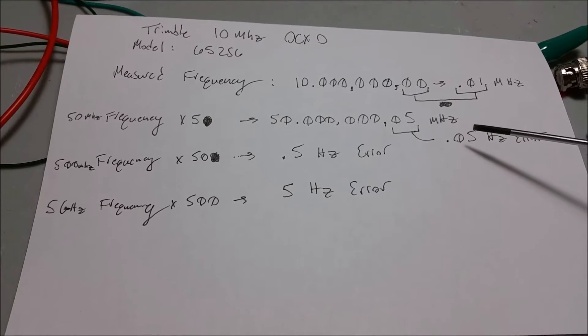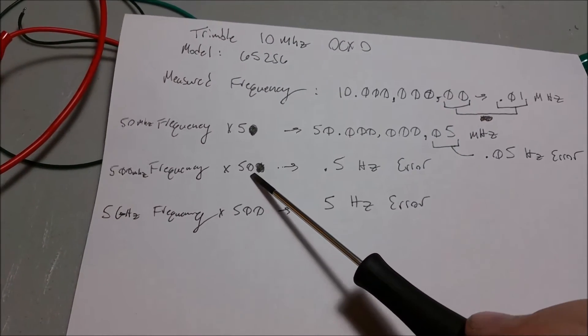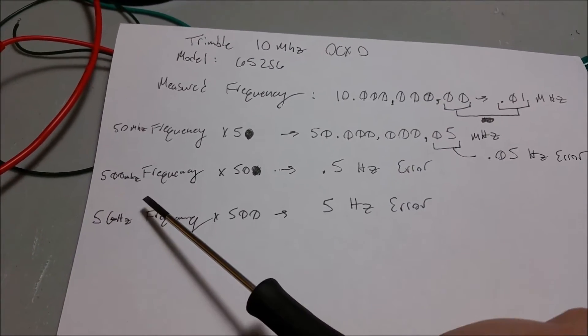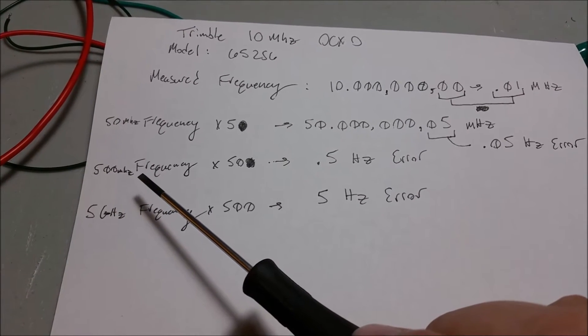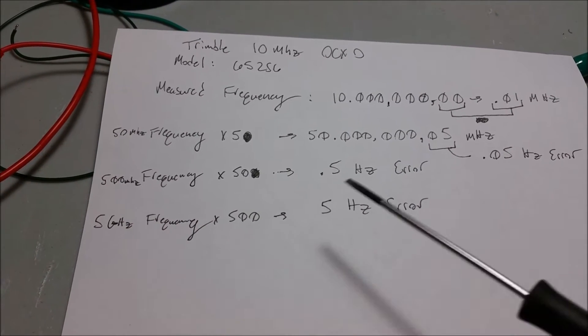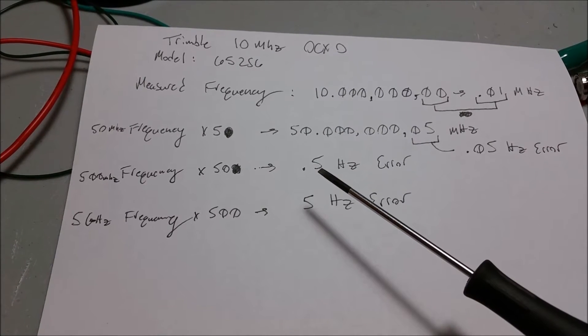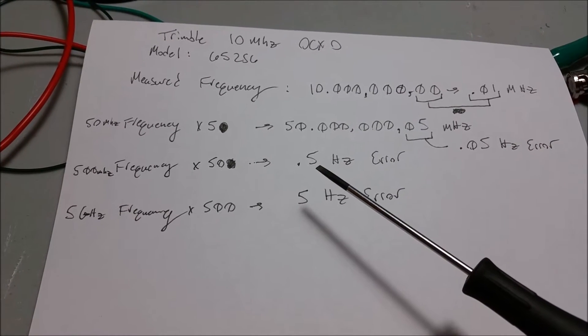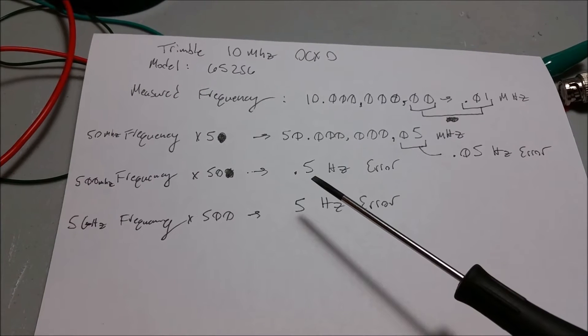Up from there, we have times it by 50, which gives us 500 megahertz frequency. We have 0.5 hertz of error, which once again not going to be noticeable.